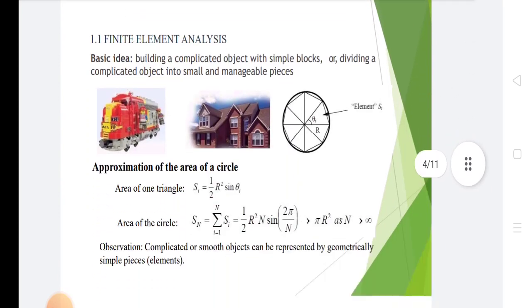In finite element analysis, the basic idea is building a complicated object with simple blocks or dividing a complicated object into small manageable pieces, that is elements. For example, approximation of the area of a circle using area of triangles: S1 equals 1 by 2 r square sin theta i. Area of the circle is given as pi r square as n approaches infinity.